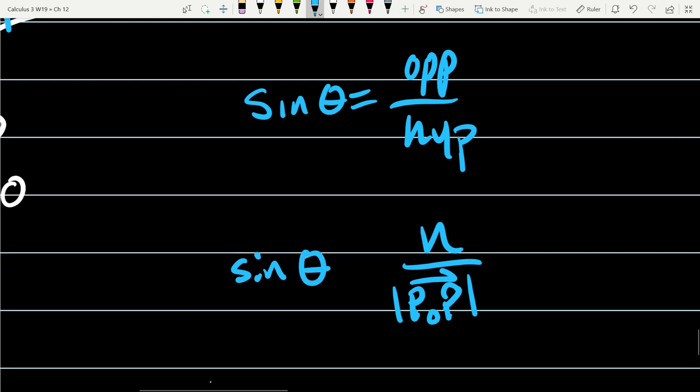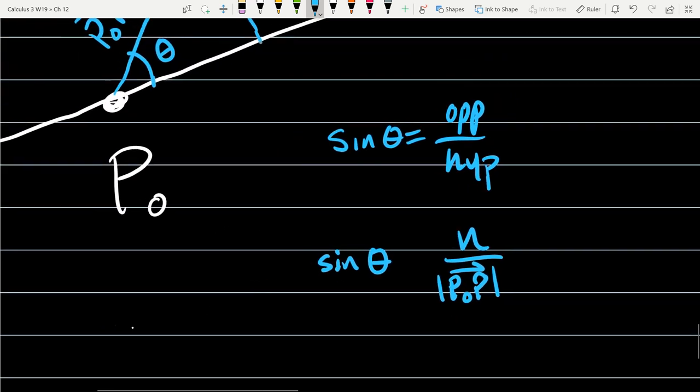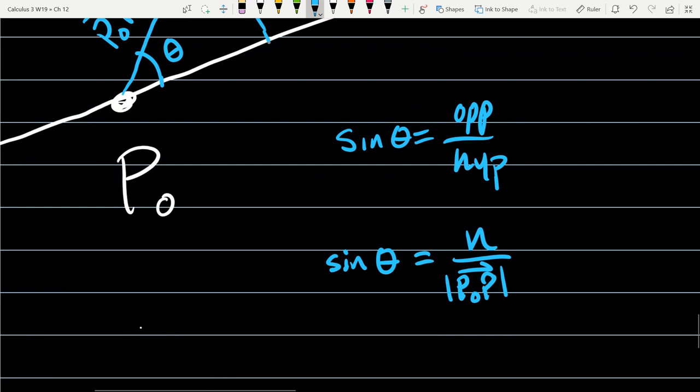It's very easy to solve for N. Just multiply by the magnitude of P₀P. So N equals sine theta times the magnitude of P₀P.